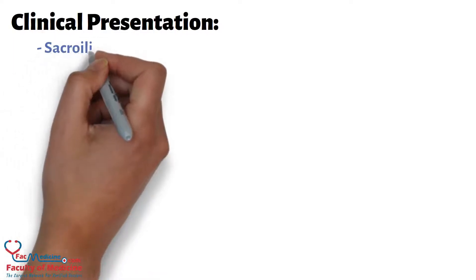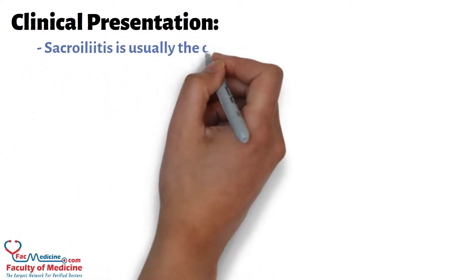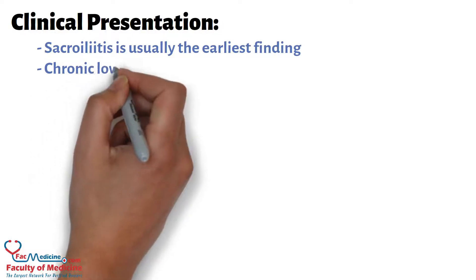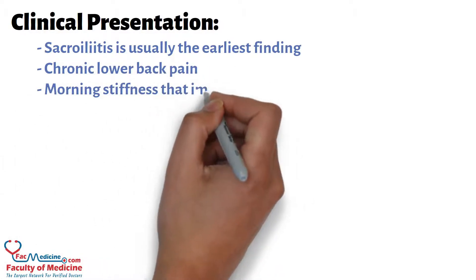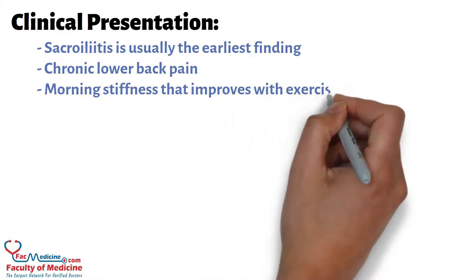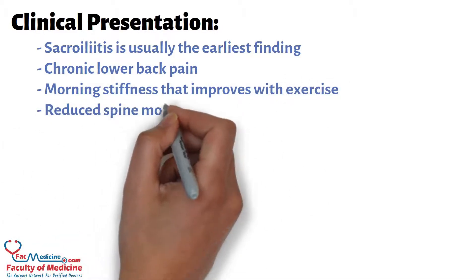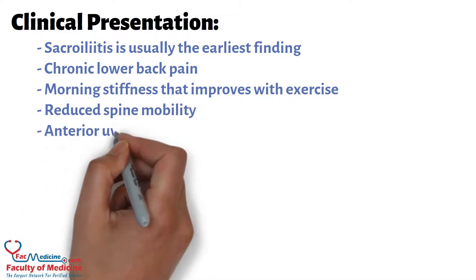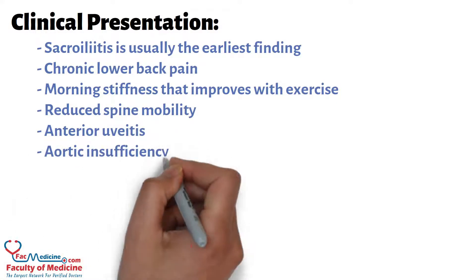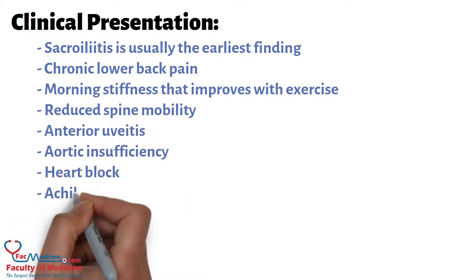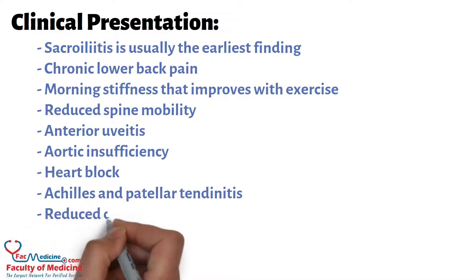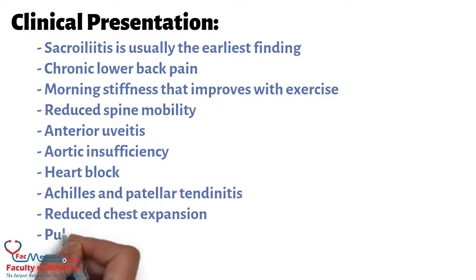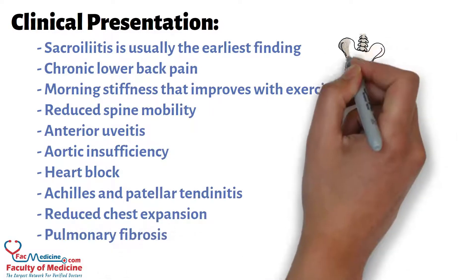Clinical presentation: Sacroiliitis is usually the earliest finding. Other features include chronic lower back pain, morning stiffness that improves with exercise, reduced spine mobility, anterior uveitis, aortic insufficiency, heart block, Achilles and patellar tendonitis, reduced chest expansion, and pulmonary fibrosis.